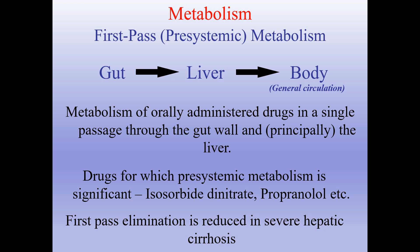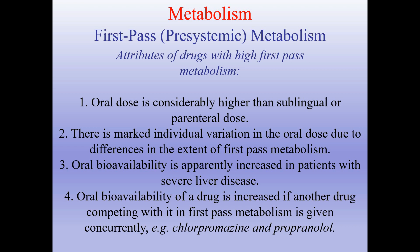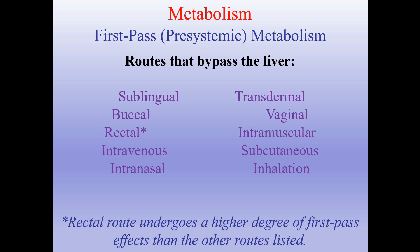Attributes of drugs with high first-pass metabolism: oral dose is considerably higher than sublingual or parenteral dose; there is marked individual variation due to differences in the extent of first-pass metabolism; oral bioavailability is apparently increased in patients with severe liver disease; oral bioavailability increases if another drug competing in first-pass metabolism is given concurrently, for example chlorpromazine and propranolol. Except for the intravenous route, other routes that bypass the liver include sublingual, buccal, rectal, intranasal, transdermal, vaginal, intramuscular, subcutaneous, and inhalation. Of these, the rectal route undergoes a higher degree of first-pass effects than the others listed.